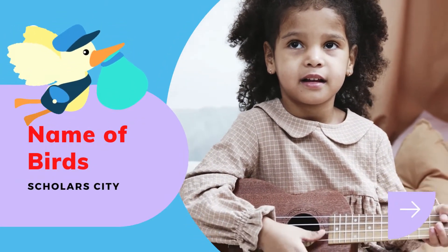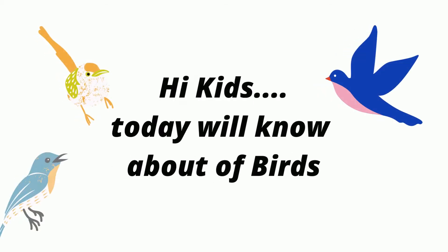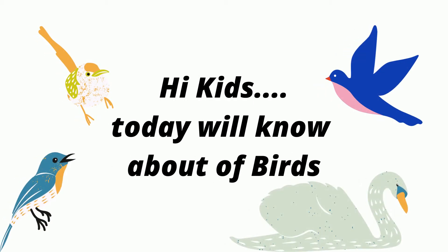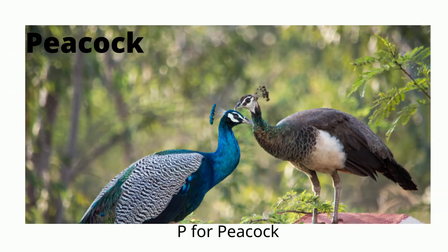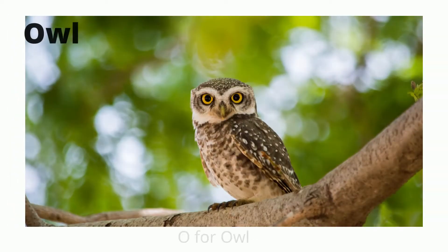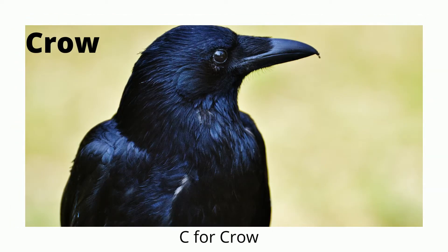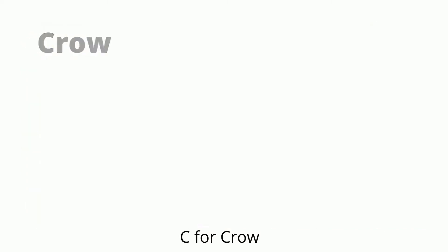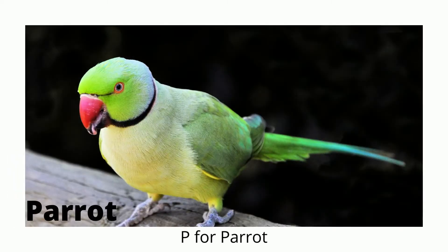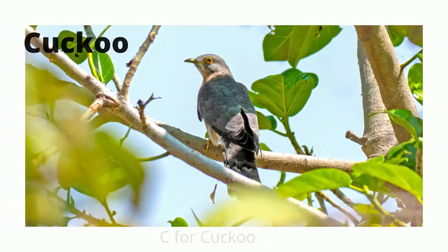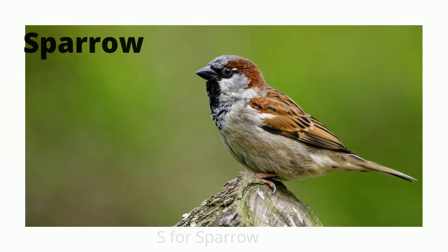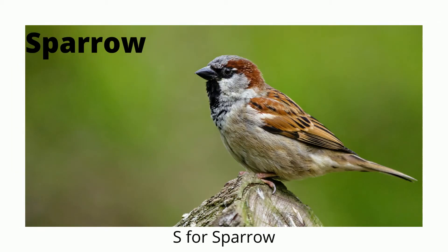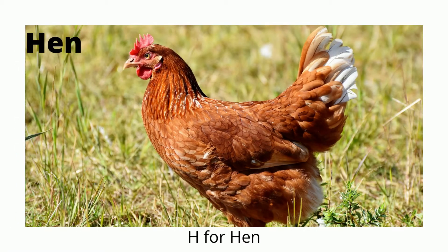Name of the birds. Hi kids, today we'll learn about birds. Let's start. Peacock - P for peacock. Owl - O for owl. Crow - C for crow. Parrot - P for parrot. Cuckoo - C for cuckoo. Sparrow - S for sparrow. Hen - H for hen.